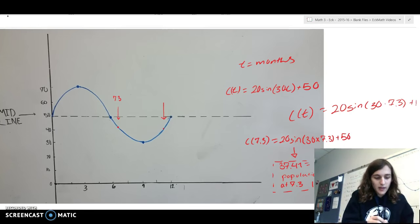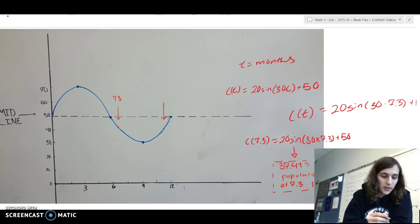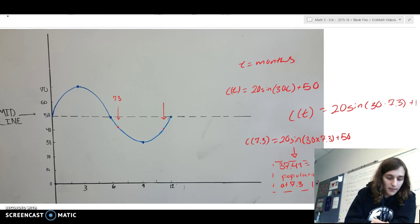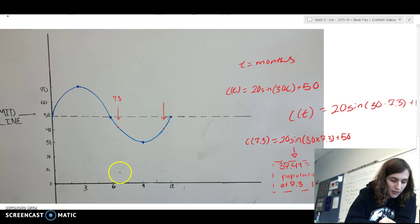Now, to find the point at which the coyote population is exactly the same at the nearest next point, it's actually pretty simple. As you can see, 7.3 months would be somewhere right around here, on the x-axis, or the months. And so, if you're going to find the next one, all you have to do is look for the next point on the midline. So, this point right here is 6, and you can see that 7.3 is 1.3 months after 6.